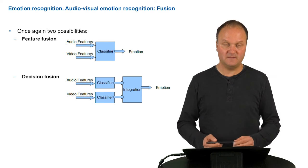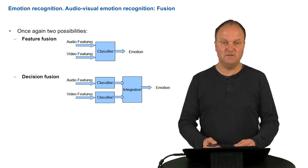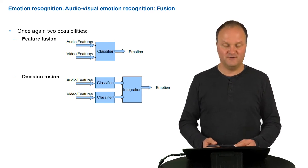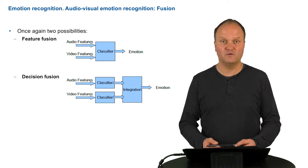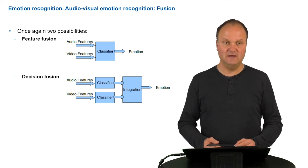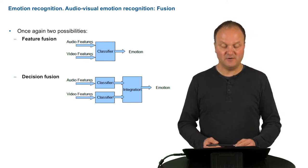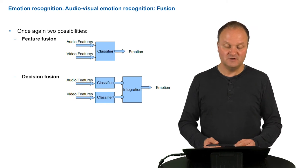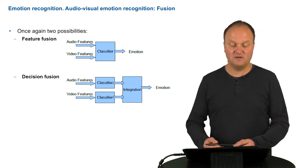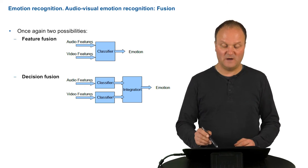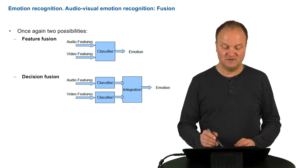The way this can be handled is the same as we have seen for audio-visual speech recognition. We can perform a feature fusion by connecting the audio features to the video features and then using one classifier only. Alternatively, decision fusion or probability fusion takes individual classifiers for the audio features and for the video features, then integrates that information into one recognized emotion in the end.